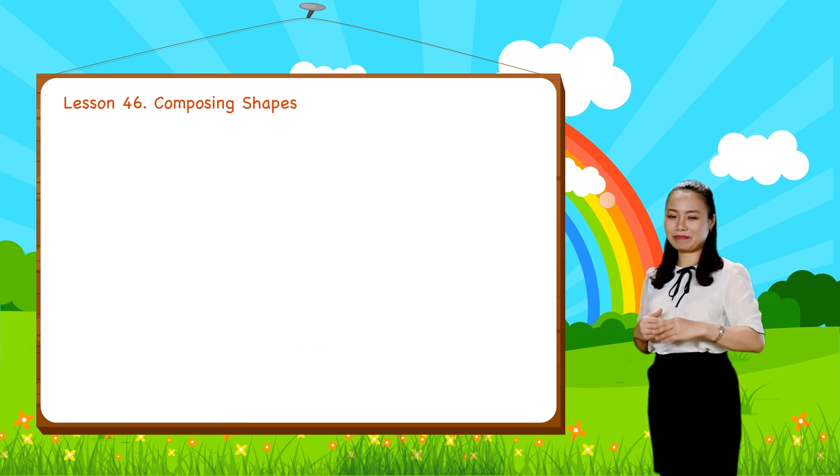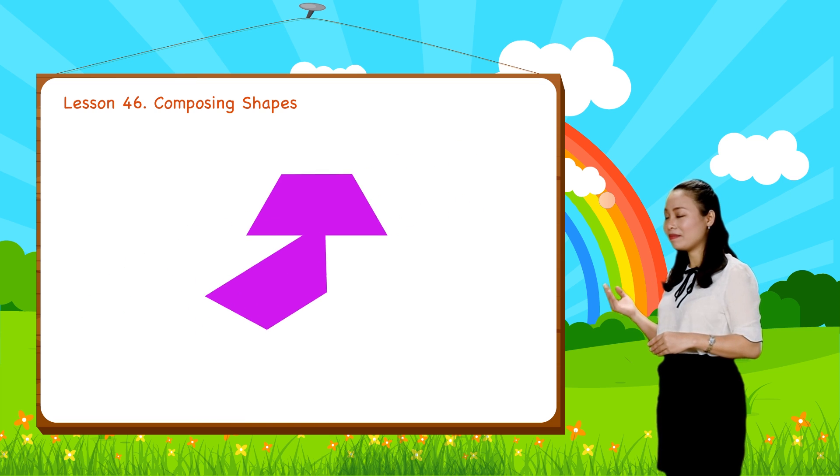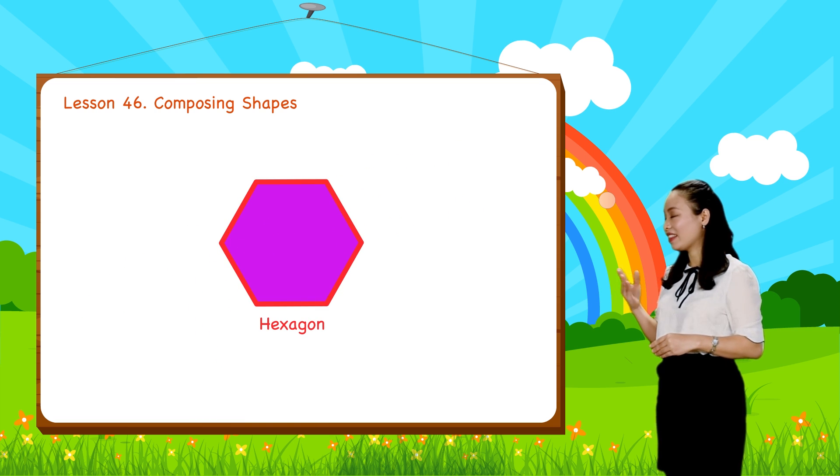Next, pick up two trapezoids, then try to make a hexagon. Can you make it? Just put them together, this way.